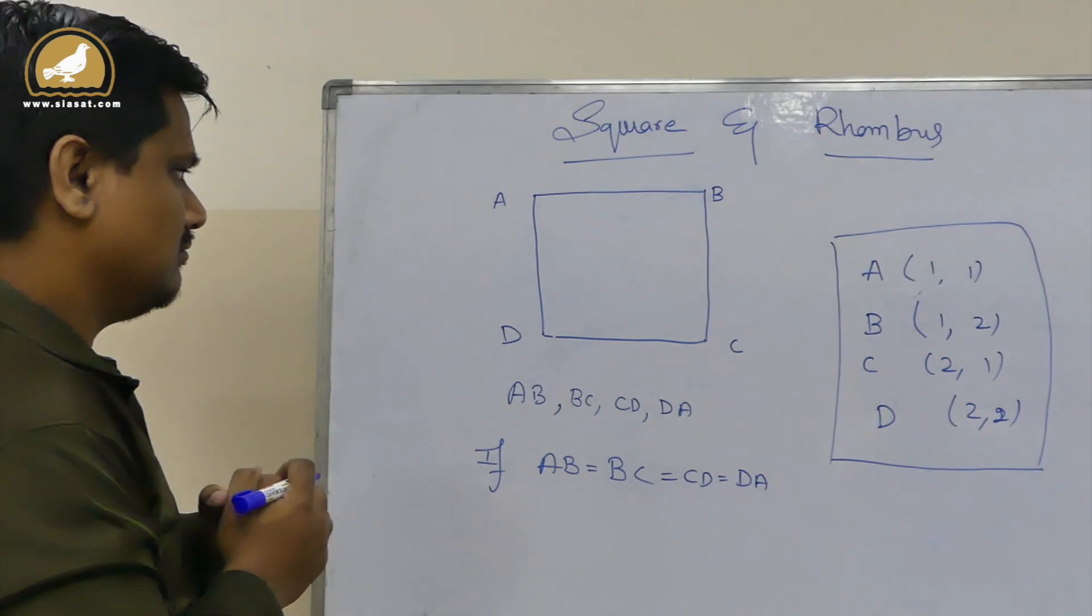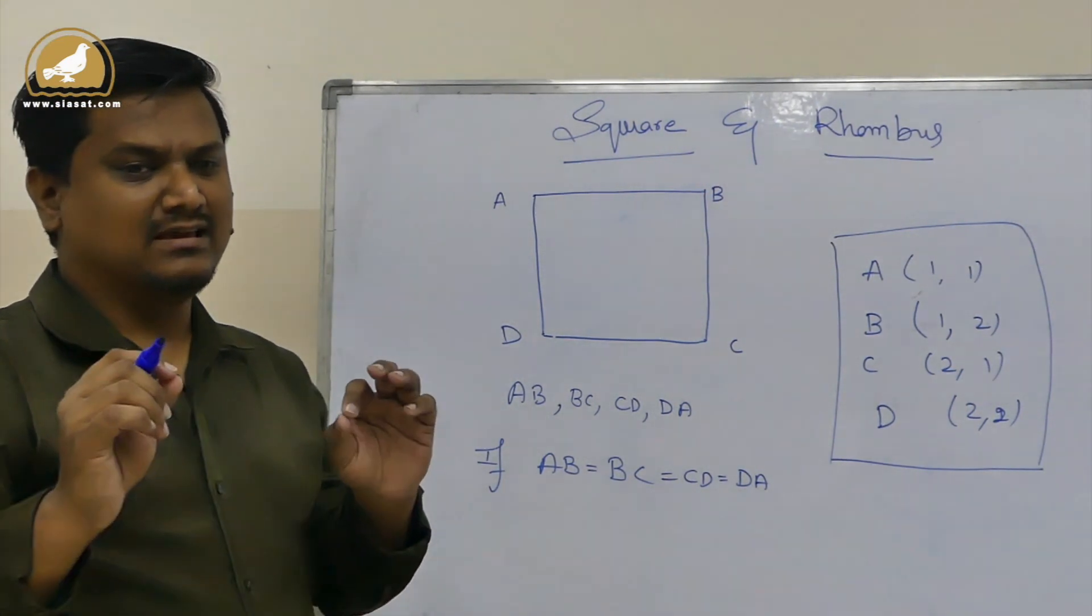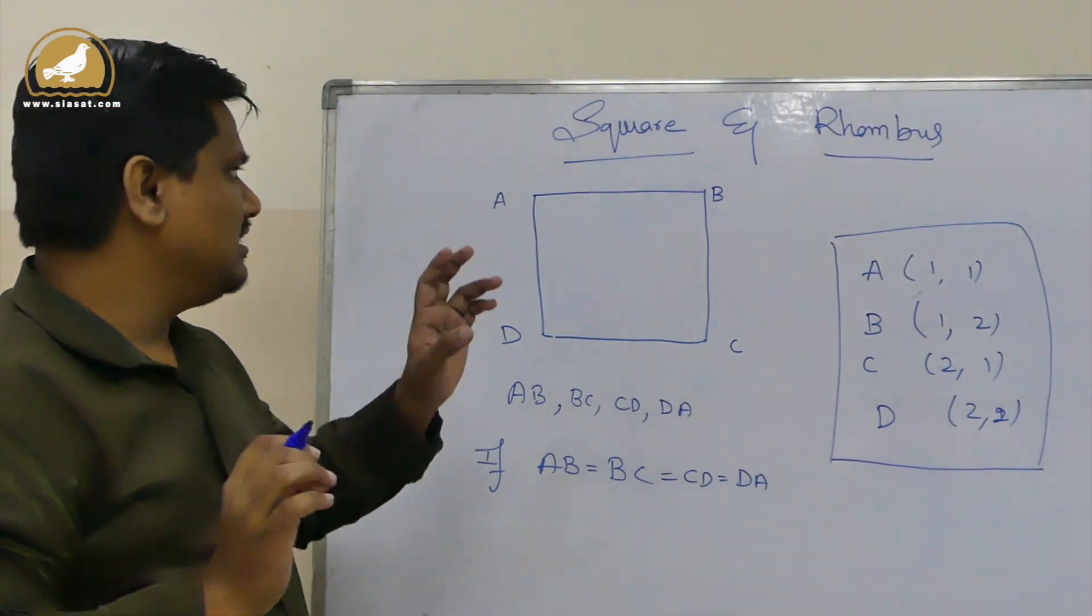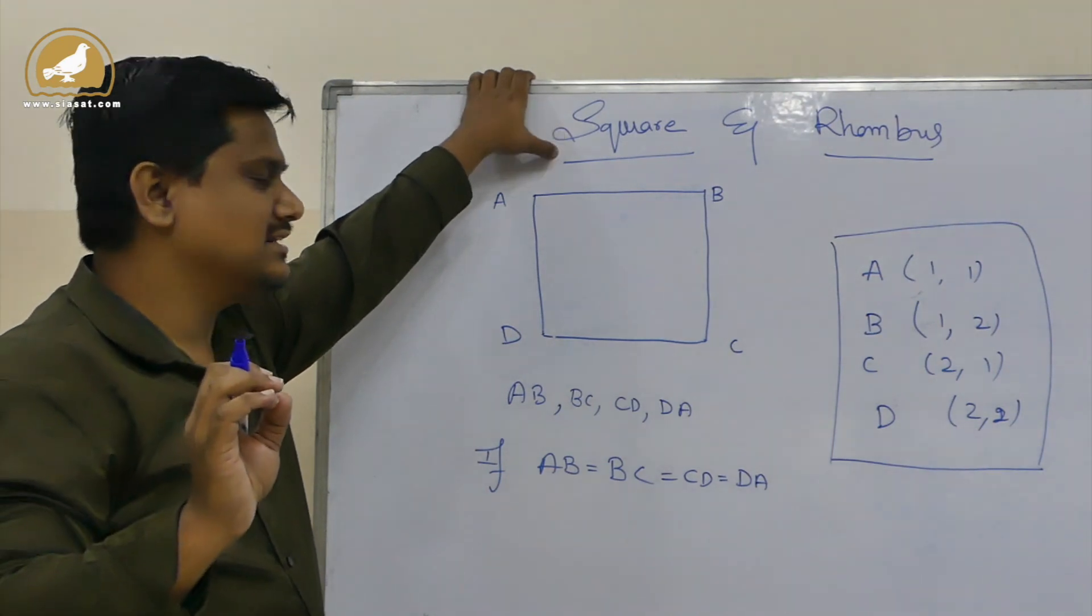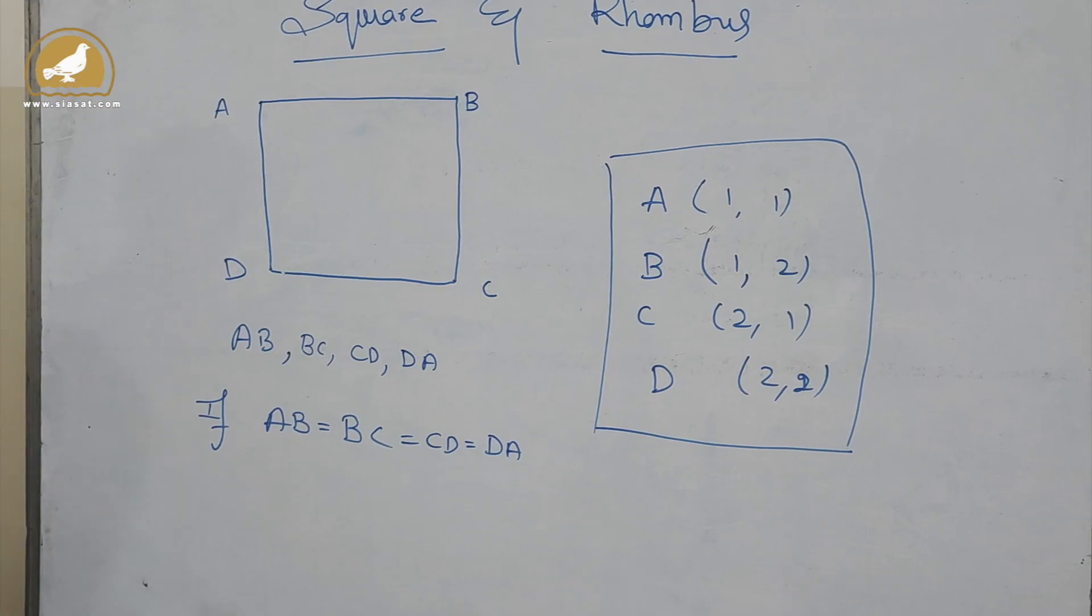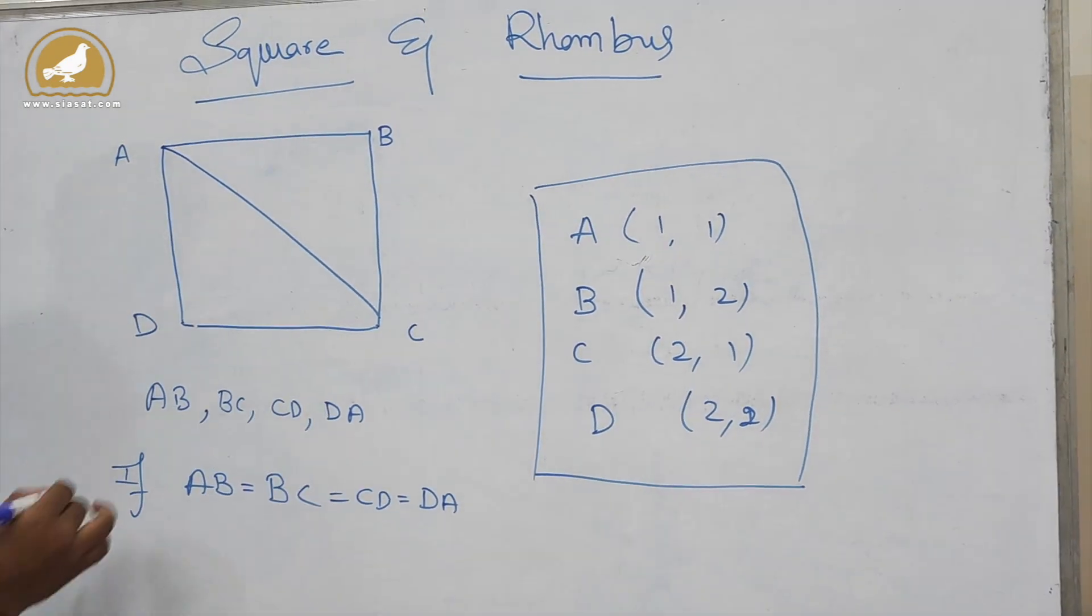then I can say that this structure may be a square. But I cannot say 100% that it is a square. Still, I need to check one more condition. I have to check the distance between A and C.